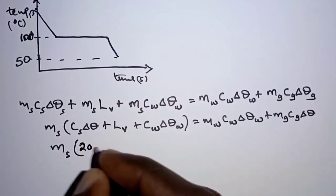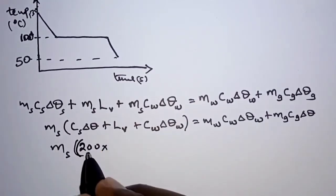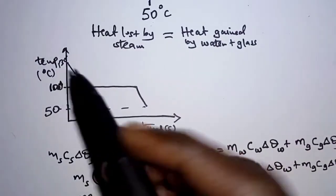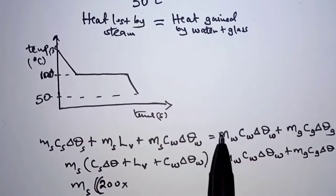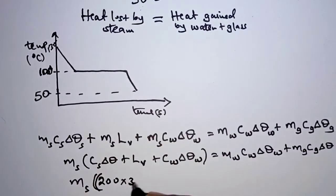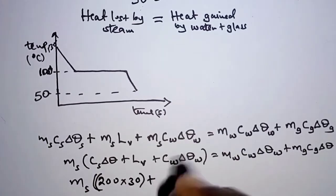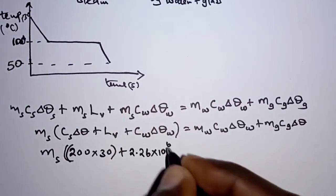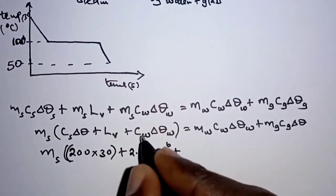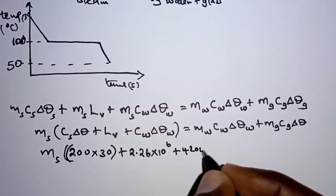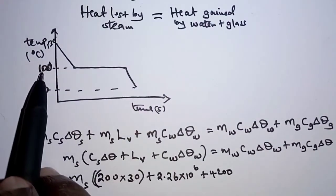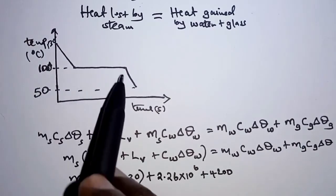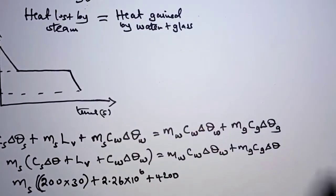Substituting on the left: mass of steam × [200 × 30 + 2.26×10⁶ + 4200 × 50]. The specific heat capacity of steam is 200 J/kg/K and the temperature change from 130 to 100°C is 30. The latent heat of vaporization is 2.26×10⁶ J/kg. The specific heat capacity of water is 4200 J/kg/K and the temperature change from 100 to 50°C is 50.